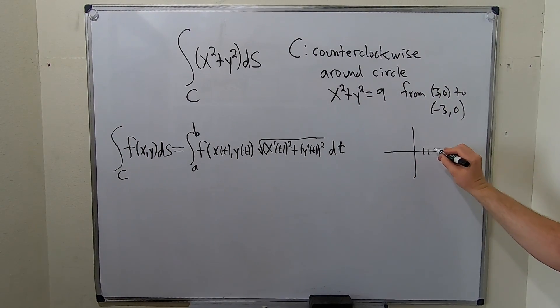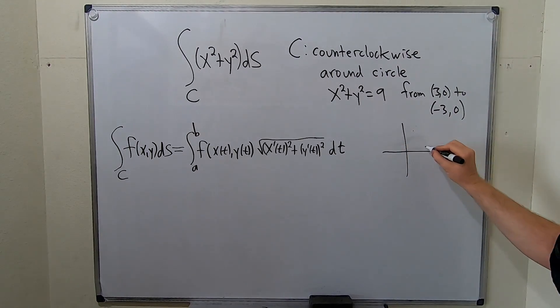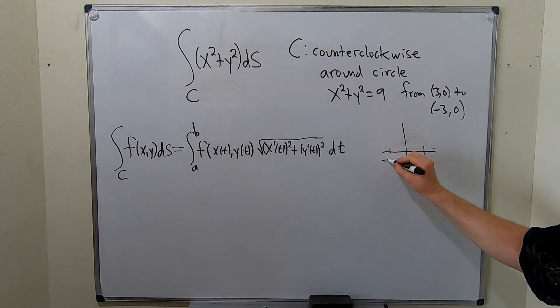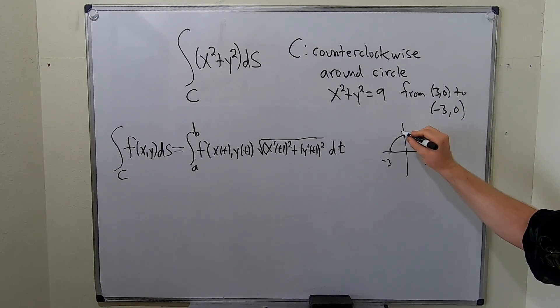So we're going from, it's a terrible picture, from here, let me just draw that again. So we're going from here, here's 3, here's negative 3. So we're going this way, and we're going this way counterclockwise, it says.